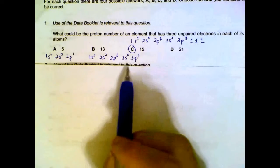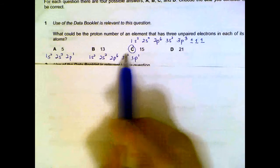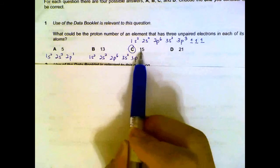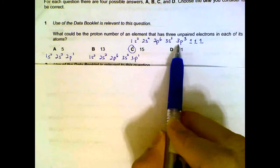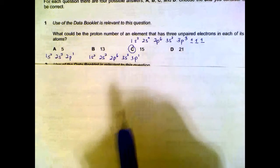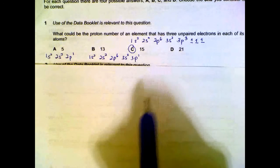Number one. If you want to write out the electron configuration, you will see that option C, phosphorus, will have a configuration that ends with 3P3. So three of the electrons in the orbitals, the P orbitals, will be unpaired.